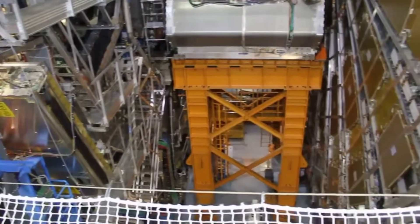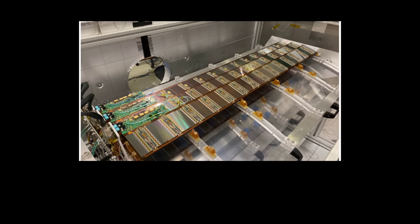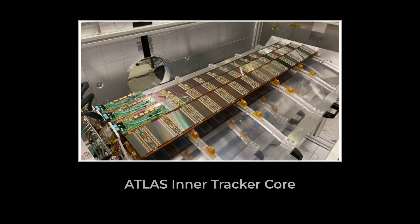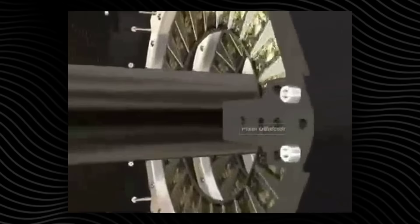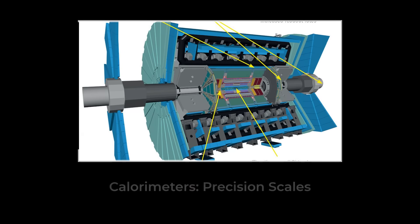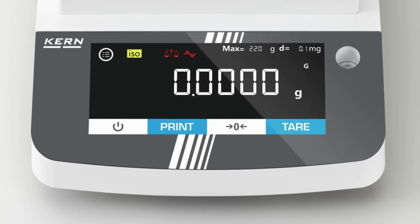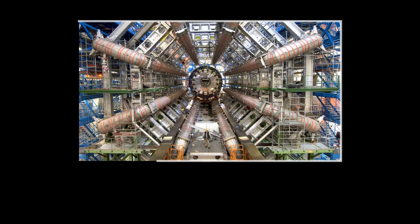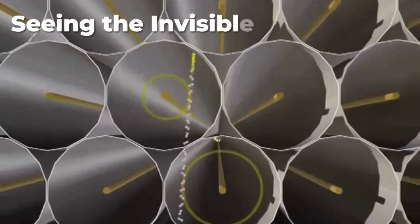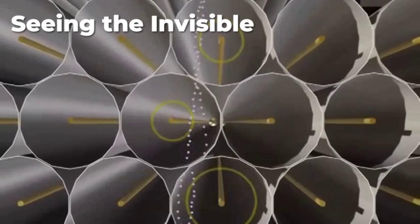The scale of ATLAS is matched by its complexity. The inner tracker, built from carbon fiber composites and silicon sensors, sits at the very center. Four nested barrels, each a marvel of miniaturization and alignment. Surrounding this, electromagnetic and hadronic calorimeters measure the energy of particles with a precision that rivals the best laboratory balances. The outermost layer, the muon spectrometer, is laced with powerful superconducting magnets and precision chambers, built to spot the faintest signatures of particles that can pass through walls of lead and steel.